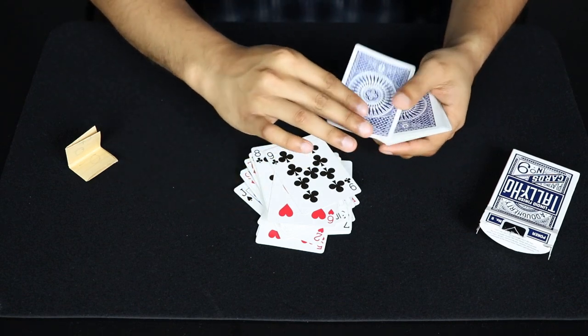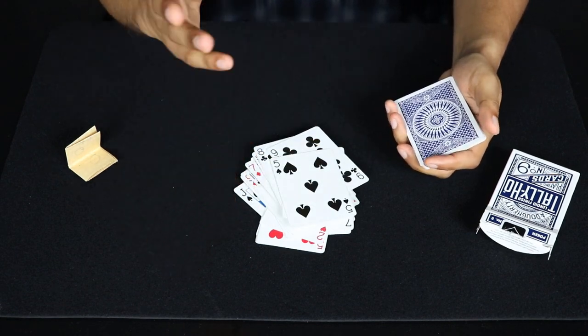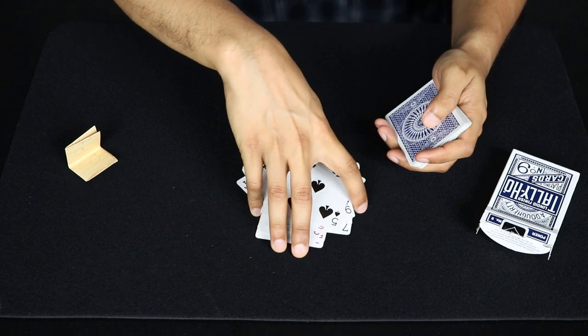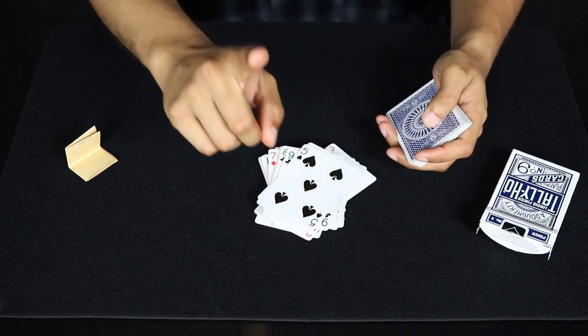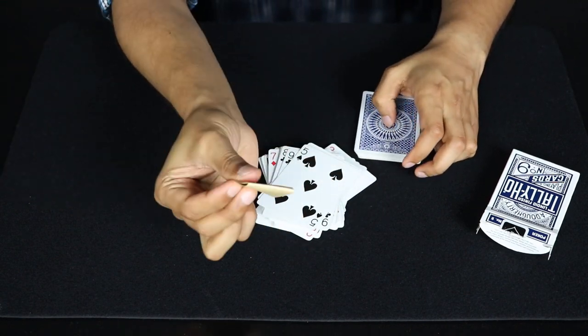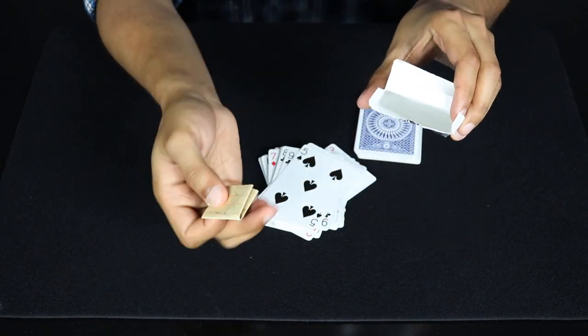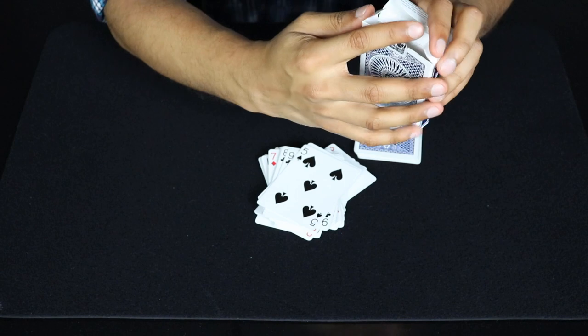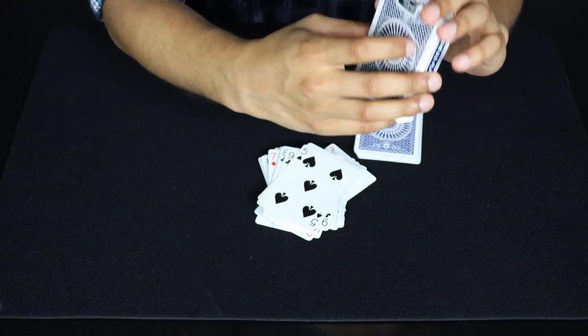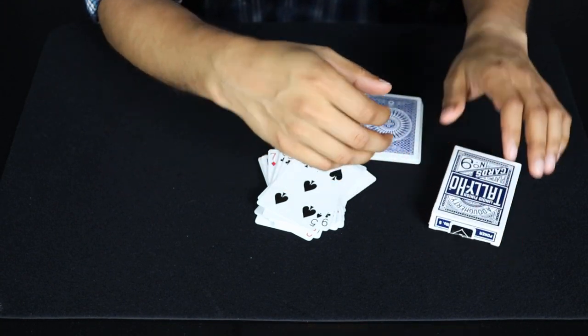So let's just say they stop at here, the five of spades. Now they stop at the five of spades, you're going to square this up. Oh, sorry forgot one step. At the beginning of course you want to tell the spectator you're putting this into the box. There's nothing else in the box so putting that in there, closing that up. Completely forgot that step, very important step by the way.